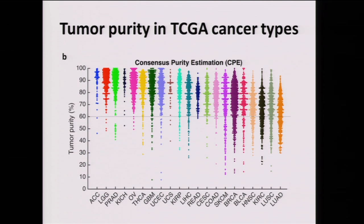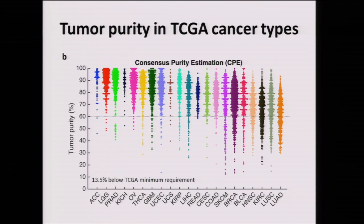The other important thing is that there are major differences within cancer types as well. In melanoma, for example, you can see tumors with very little purity and also tumors with very high purity. You can also see the 60% line — TCGA has a minimum requirement of 60% estimated by pathologists — but many samples fall much lower than 60%, which could be a problem.